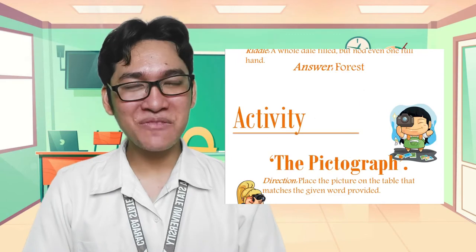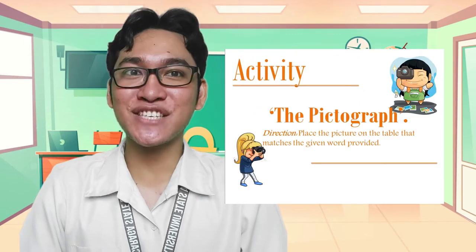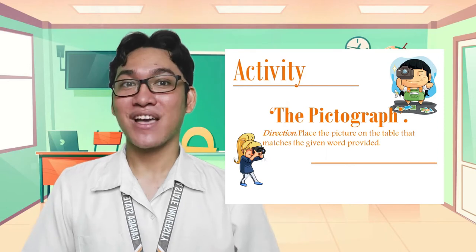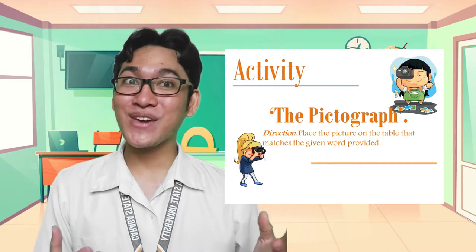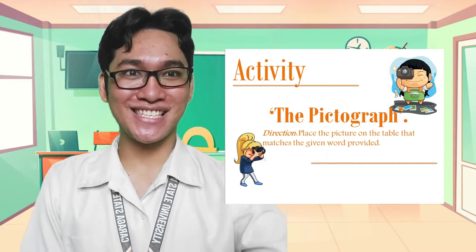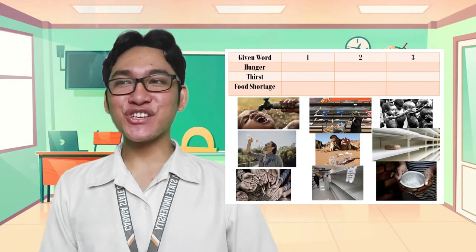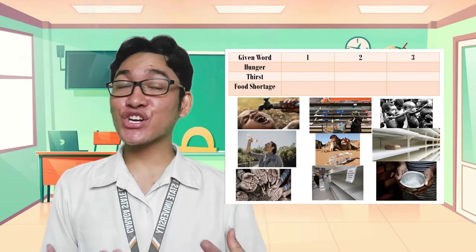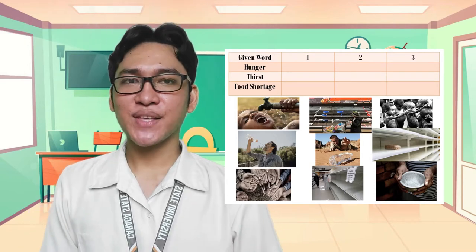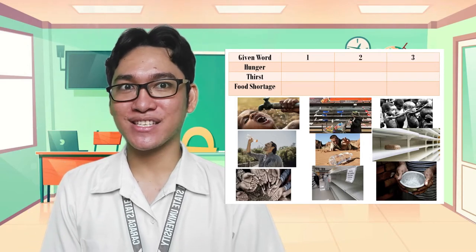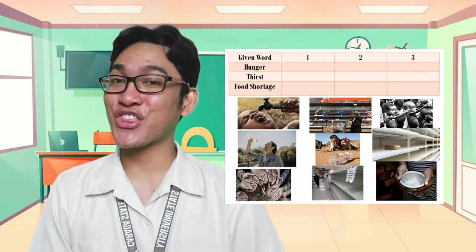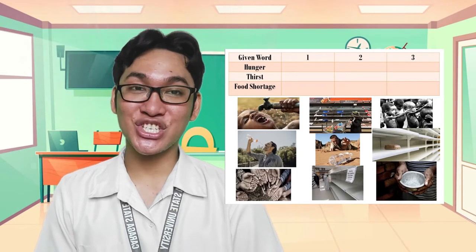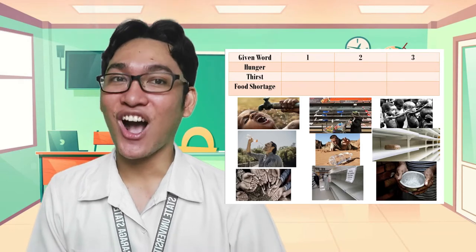I think all of us are now motivated. Let's now move to our first major activity, which we call the picture gap. Direction: place the picture on the table that matches the given word provided. The first word given is hunger, second is thirst, and third is food shortage. The first image is thirst, the second image is food shortage, the third image is hunger, the eighth image is food shortage, and the last image is hunger.